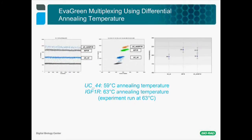A third approach to duplexing with EvaGreen utilizes the difference in melting temperatures, or Tm, between assays. The amount of fluorescence emitted by EvaGreen is dependent on the final amount of DNA present in the droplets. Assays of similar sizes but different Tms will have different PCR efficiencies when amplified at the same temperature. In this case, an assay with a Tm of 59°C (UC44) is combined with an assay with a Tm of 63°C (IGF-1R). The PCR was run at 63°C, favoring the reaction for IGF-1R positive droplets, resulting in differences in fluorescence leading to four different clusters. When clusters are identified in QuantaSoft, the quantification for each target is similar whether assays are done separately or in duplex.